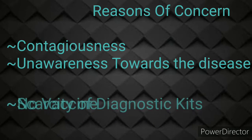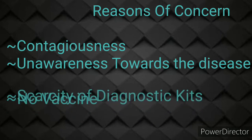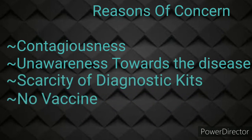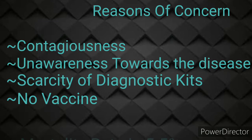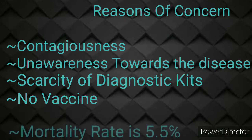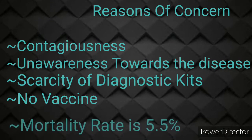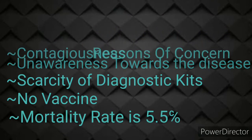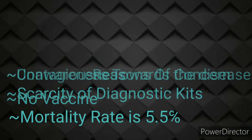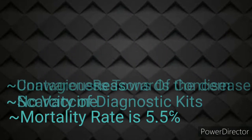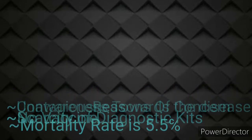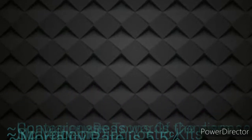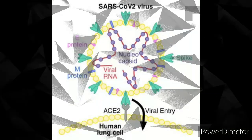Scarcity of diagnostic kits and unavailability of a vaccine till date is a major factor. Moreover, the mortality rate is 5.5% in comparison to influenza where it is only less than 0.2%. So we should definitely understand the pathophysiology and fate of coronavirus in the human body.